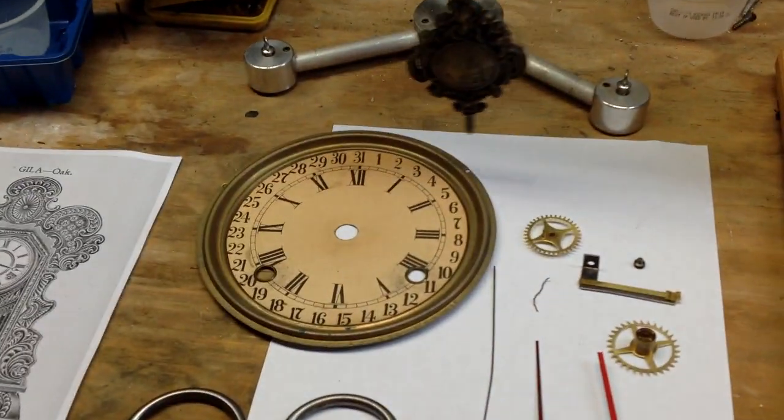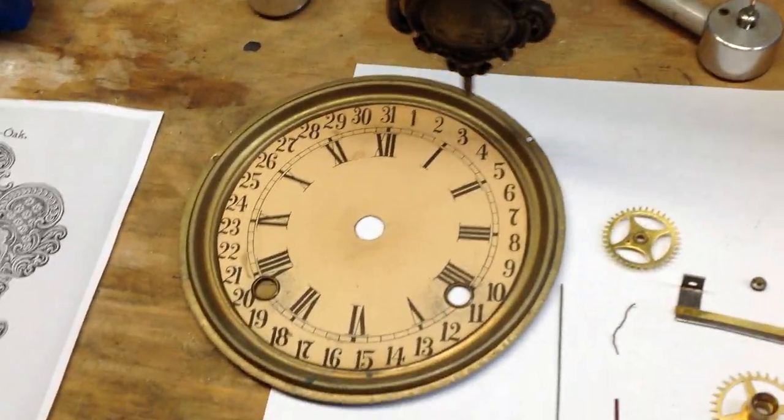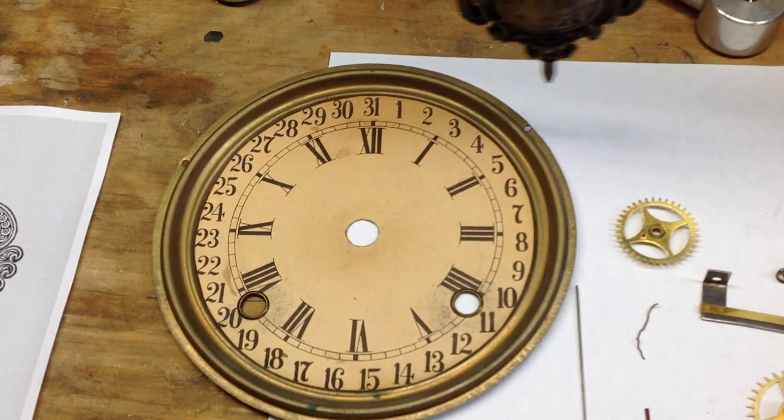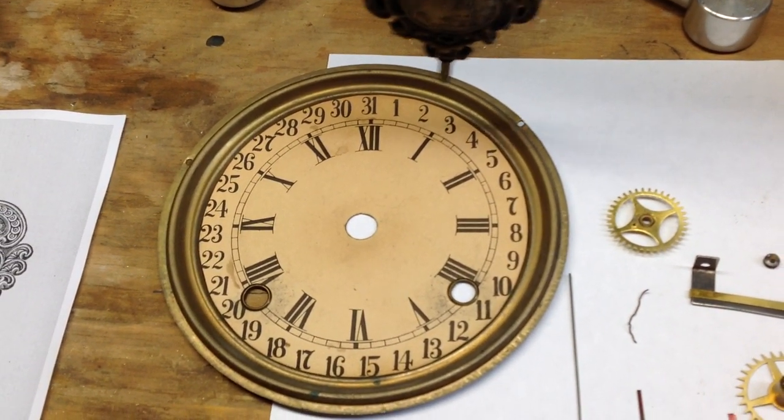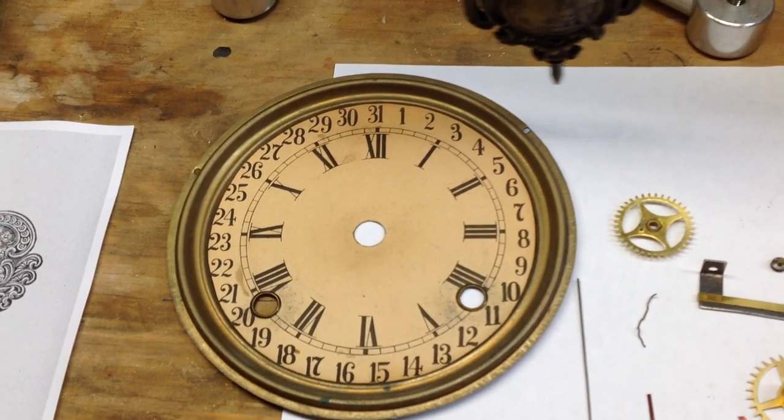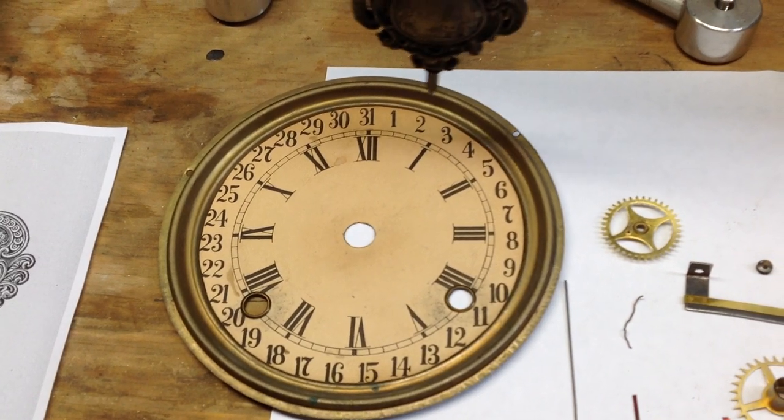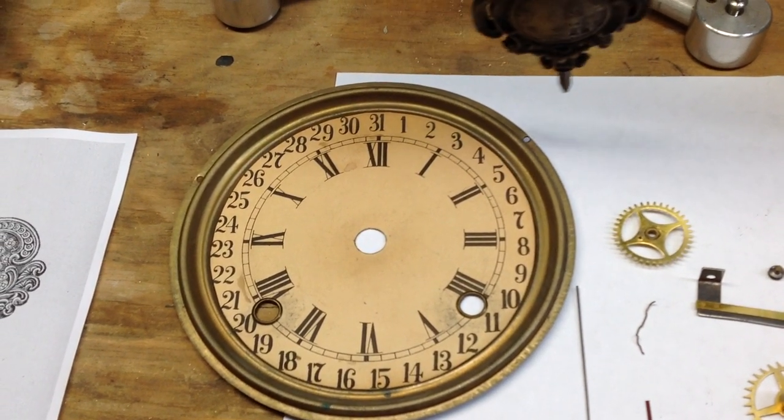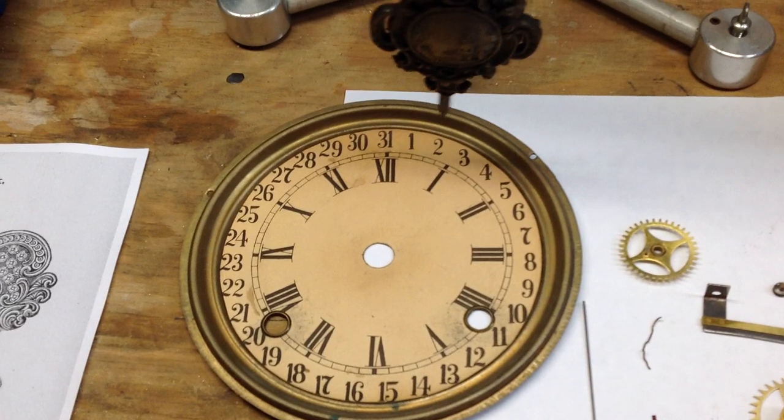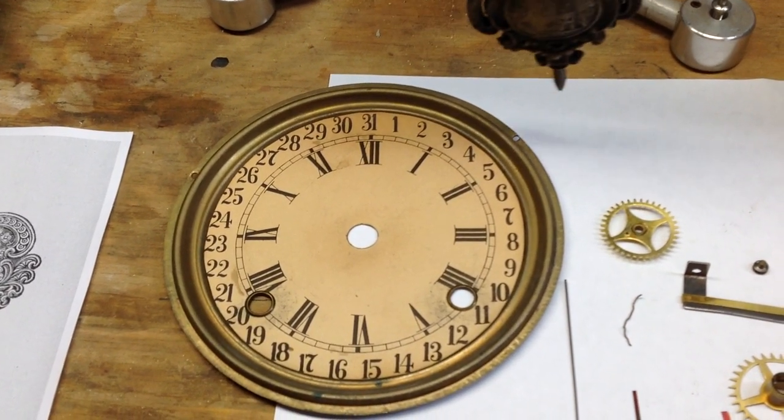This is the dial of the clock and in addition to the Roman numerals for the hours it has the numbers 1 through 31 running around the edge of the dial at the very outside. So this clock has a calendar feature.